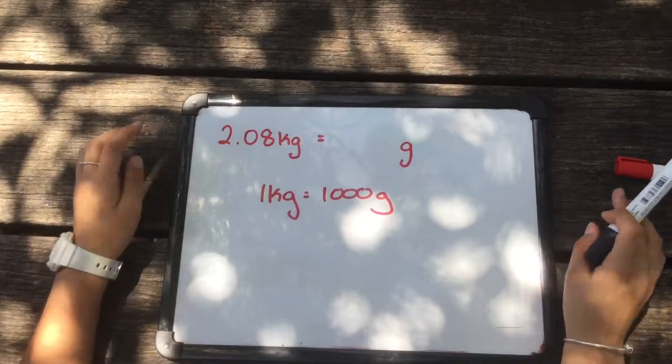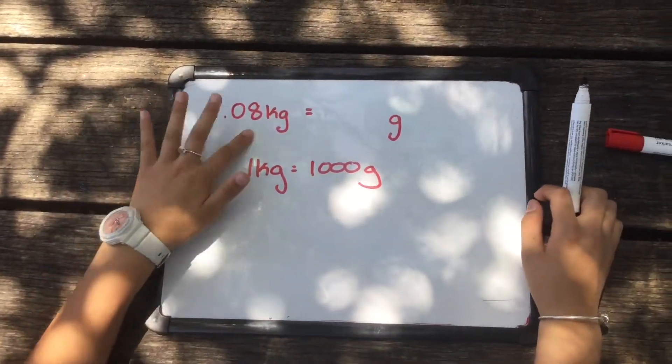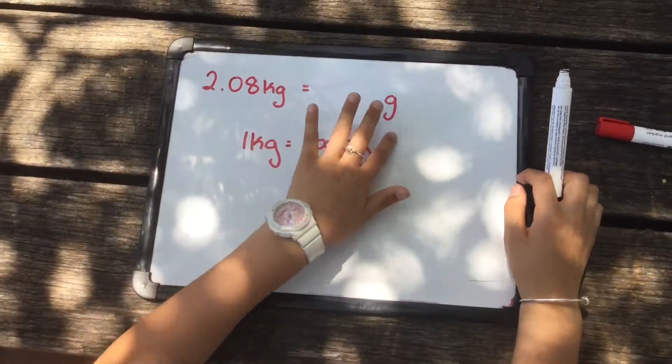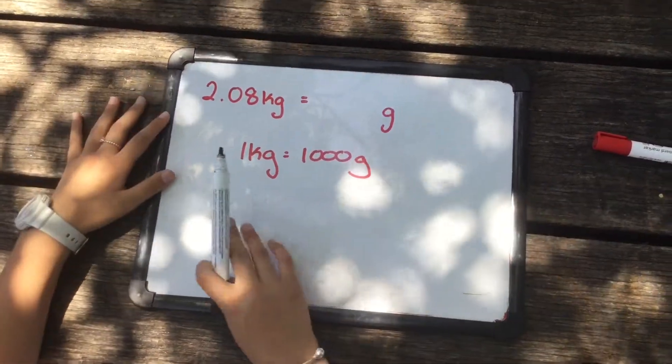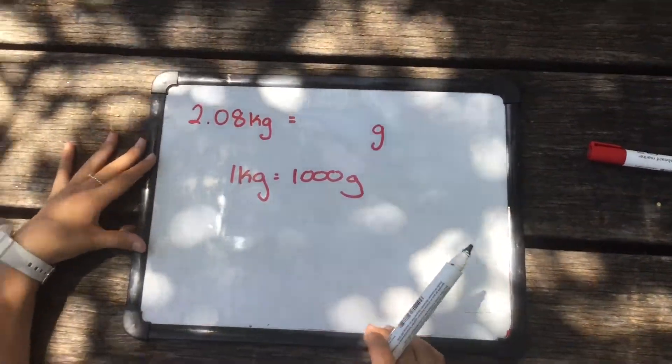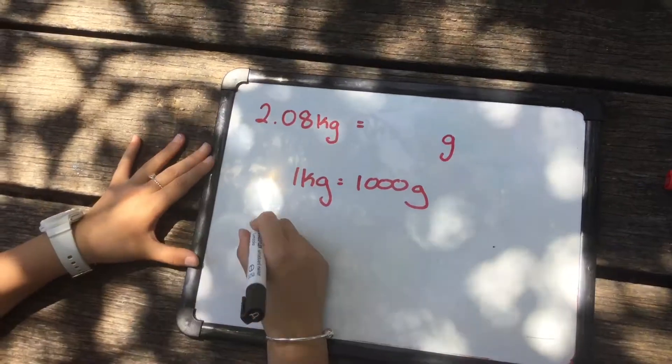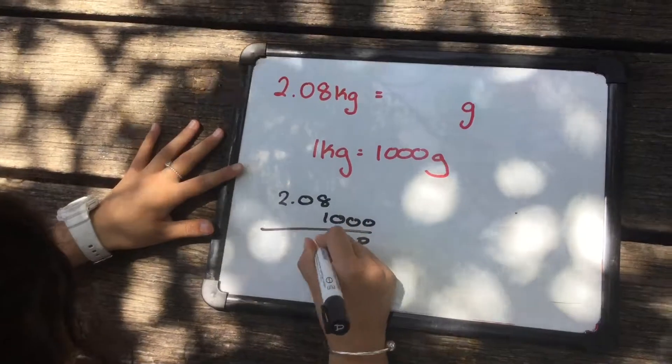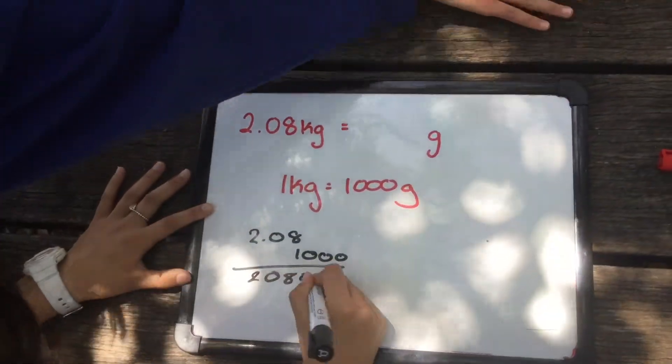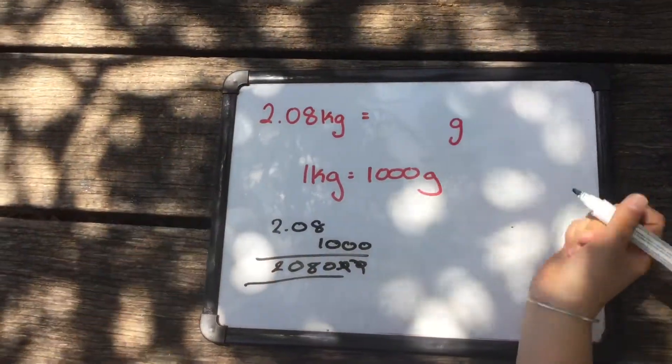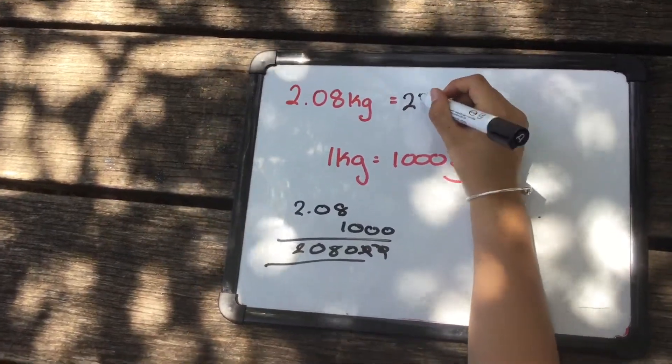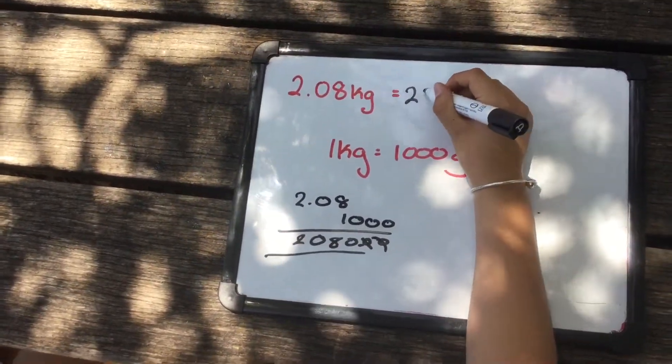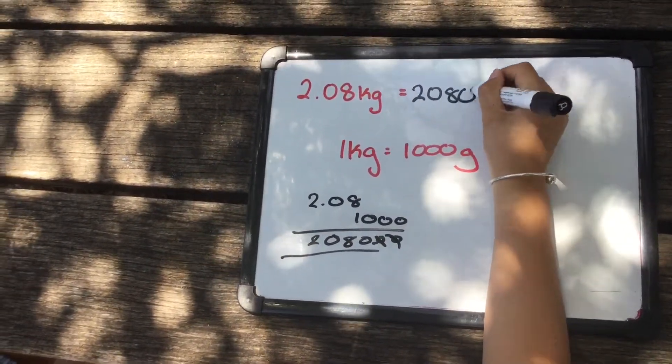What we are going to do now is transfer 2.08 kilograms to grams. So as we know, 1 kilogram is 1000 grams. So what we are going to do is times 2.08 times 1000. So from this equation we now know that 2.08 kilograms is 2,080 grams.